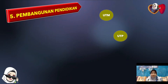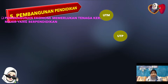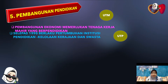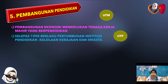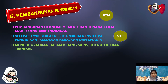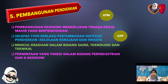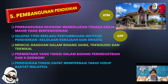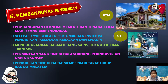Aspek yang kelima ialah berlakunya pembangunan dalam bidang pendidikan. Pembangunan ekonomi memerlukan tenaga kerja mahir yang berpendidikan. Selepas tahun 1990, berlaku pertumbuhan institusi pendidikan sama ada di bawah kelolaan kerajaan mahupun swasta. Muncul graduan-graduan dalam bidang sains, teknologi dan teknikal. Permintaannya juga adalah tinggi dalam bidang perindustrian dan ekonomi. Malah pendidikan tinggi dapat memperbaiki taraf hidup rakyat Malaysia, antaranya seperti penubuhan UTM dan Universiti Teknologi Petronas.